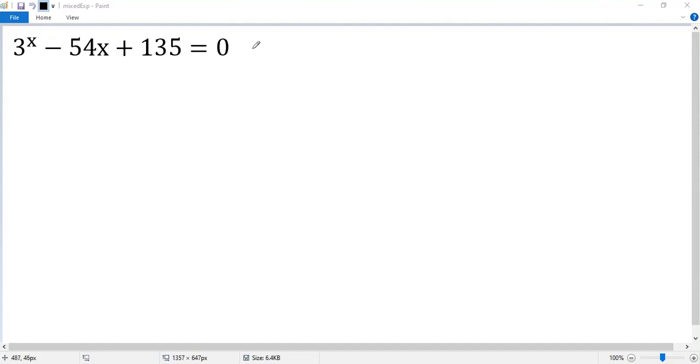Let's see how to solve this mixed equation. Move the terms to the right side, so we get 3 to the power of x equals 54x minus 135.